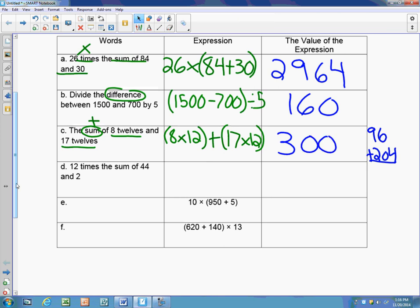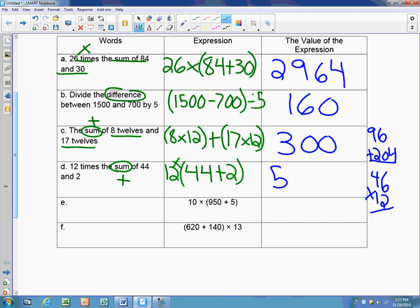Next one, we have 12 times the sum of 44 and 2. The sum again is telling me to add. We can put a multiplication sign in there or just leave it next to the parentheses. Both of those tell me to multiply the sum of 44 and 2. First thing I need to do is add 44 plus 2 and I get 46. Then I'm taking my 46 and multiplying it by 12. When I multiply 46 by 12, I get 552.